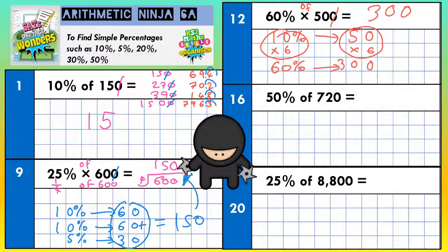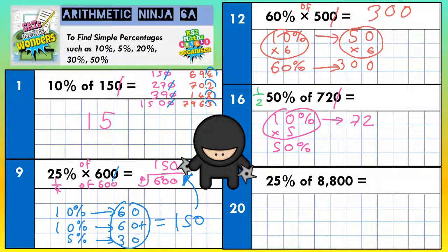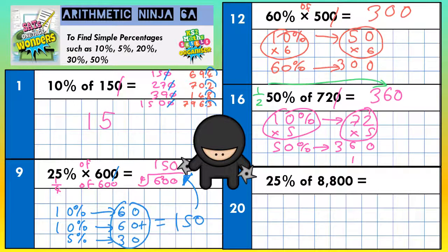Question number 16: 50% of 720. Now, 50% is the same as a half, so you could just halve 720. But we're going to do it a slightly different way, because 10% will work any time. So 10% of 720: knock the zero off — that's 72. We need to build that up to 50%, so five lots of 10% gives us 50%. Five times 72: five twos are 10, put the zero in, carry the one; five sevens are 35 plus one is 36. So 50% is 360. Which, as we said, you could have just done a half: half of 720 is 360.